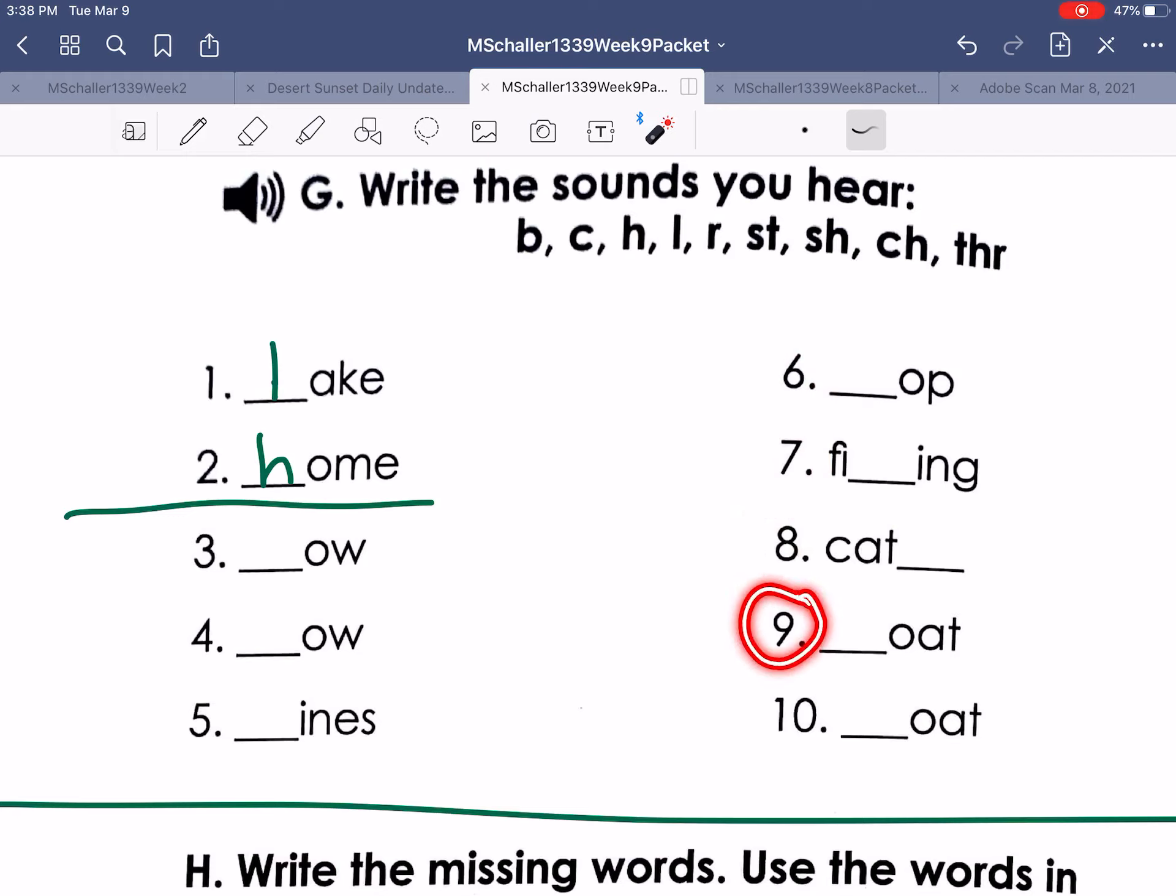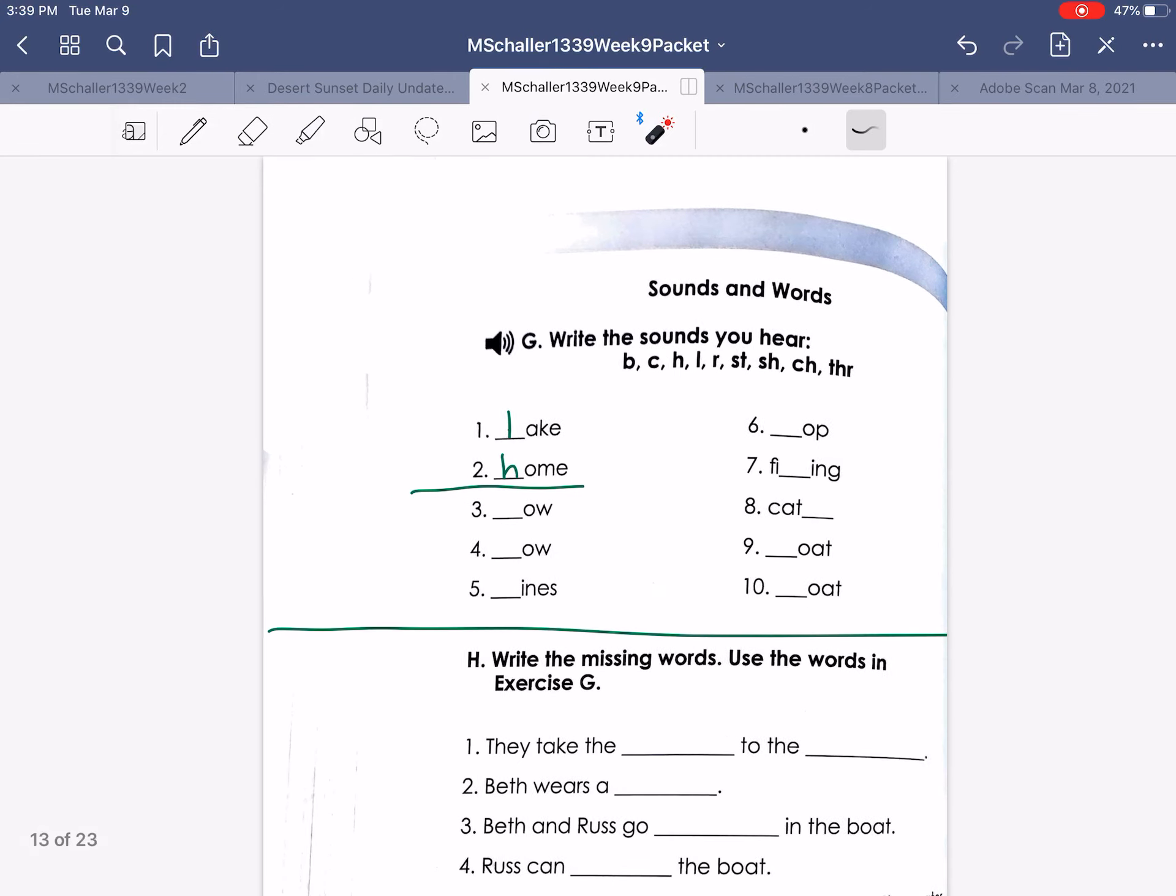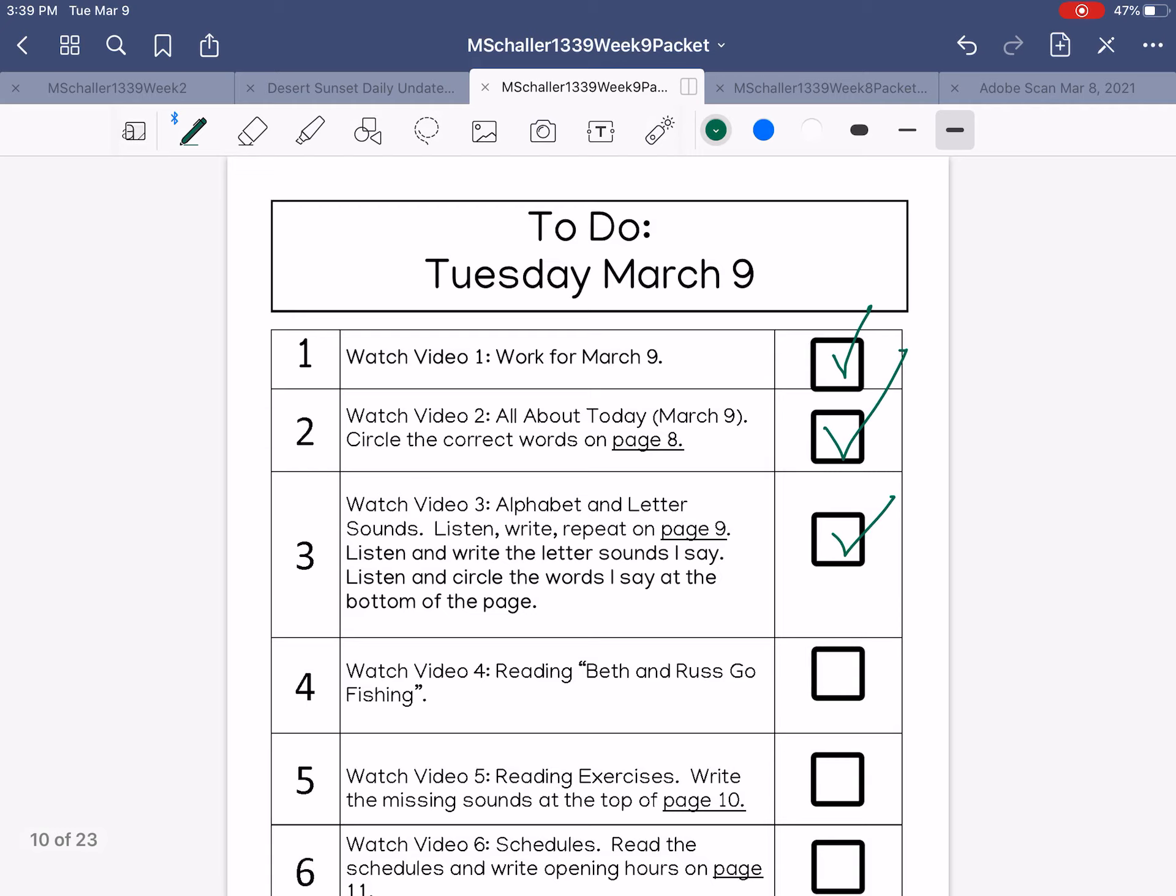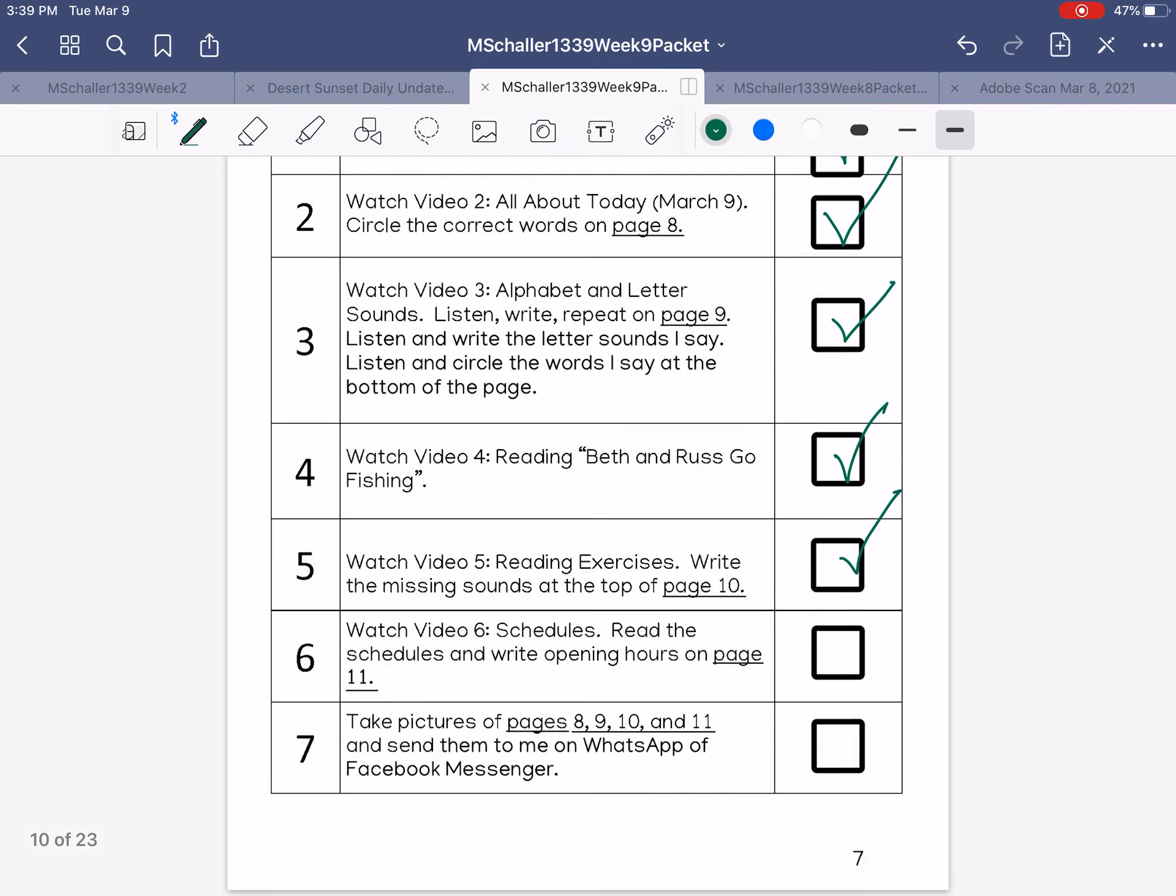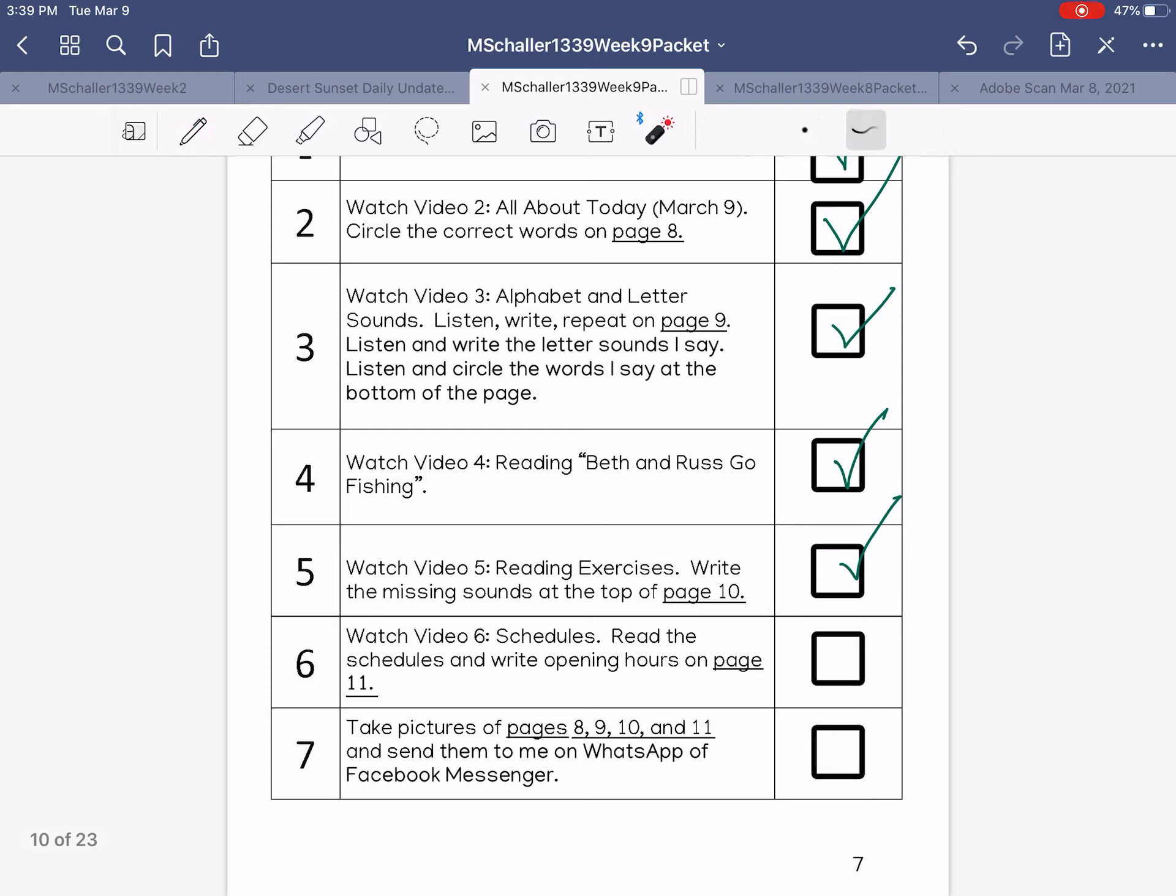Number nine, boat. And number ten, coat. All right. And you're finished, you can check off numbers four for the reading and five for the reading exercises, and now go watch video six schedules.